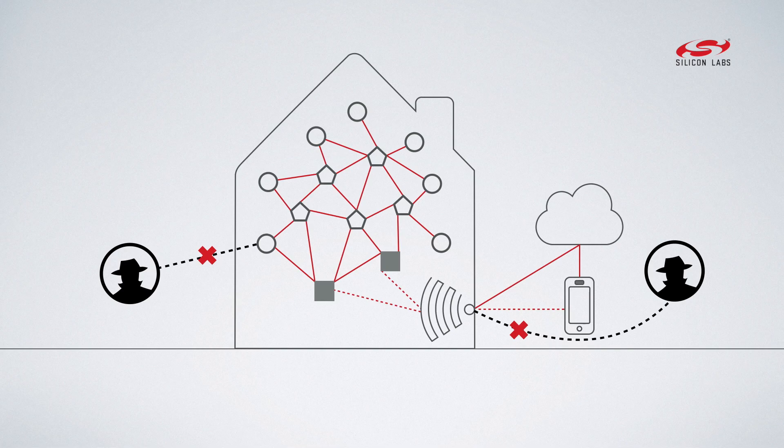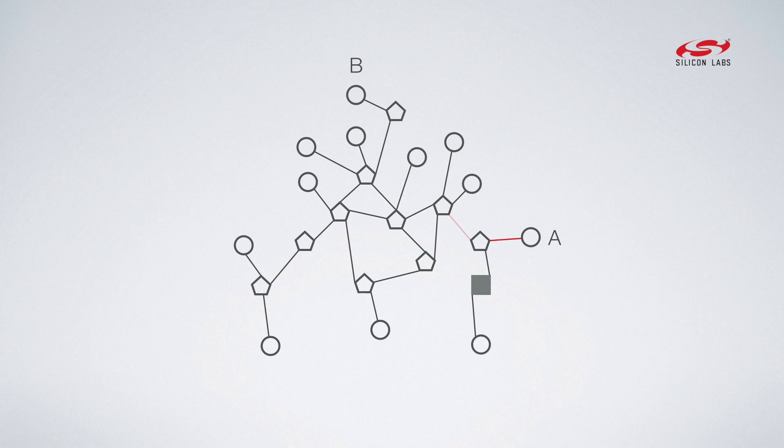For wireless security, Thread uses standard IEEE 802.15.4 authentication and encryption. To this, Thread adds an additional handshake between each pair of communicating nodes for increased security.